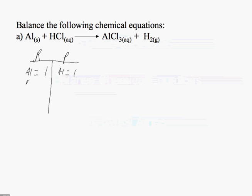Hydrogen is equal to 1 on the reactant side. On the product side, hydrogen is equal to 2.